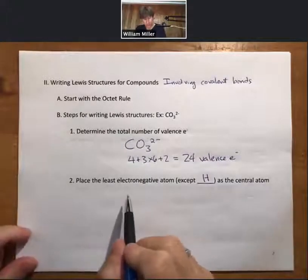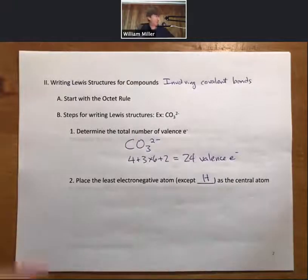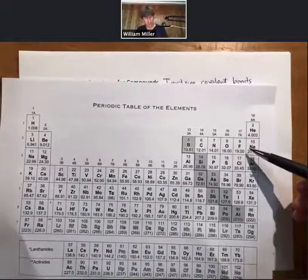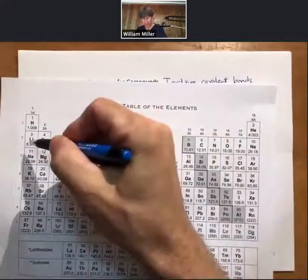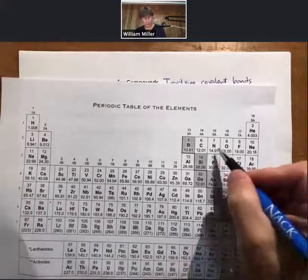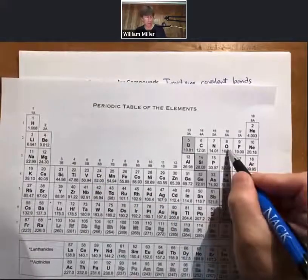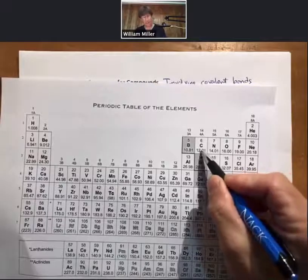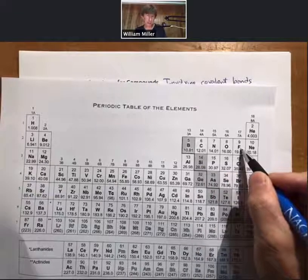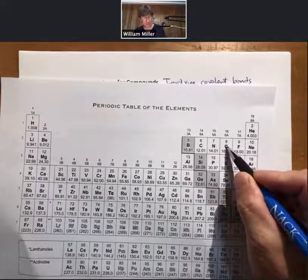Place the least electronegative atom. Electronegativity trends. This is where this becomes important. As you go to the left and down, electronegativity decreases. If we have two elements, carbon and oxygen, then carbon will be less electronegative. It turns out that fluorine is the most electronegative element, oxygen is second, and chlorine and nitrogen are tied for third.